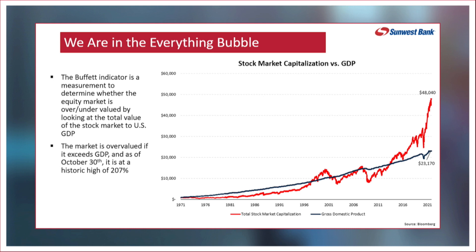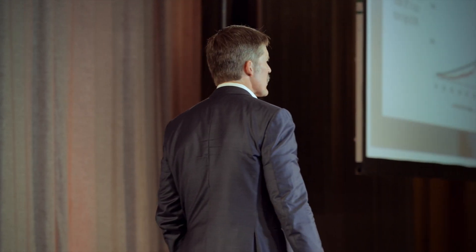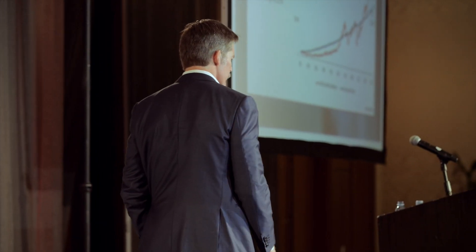You had the Great Financial Recession where it went way down, then kind of came back, and as the Fed kept expanding its balance sheet, it kept moving higher and higher. Now we're at 207%. We're so wildly overvalued, and you can look at almost any asset value — that is the case.